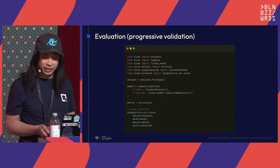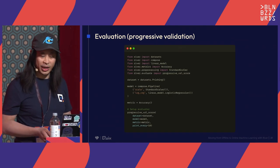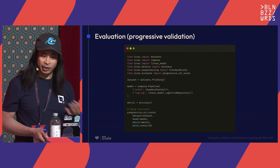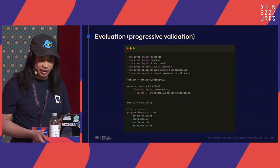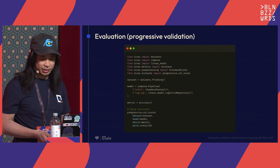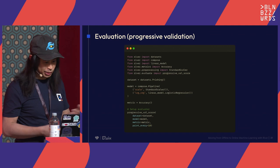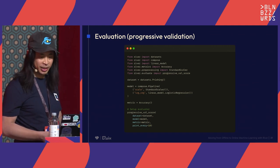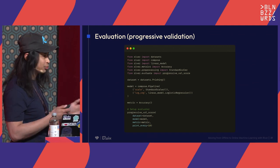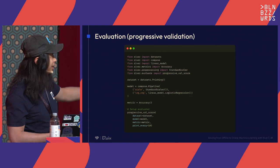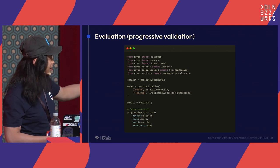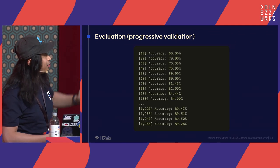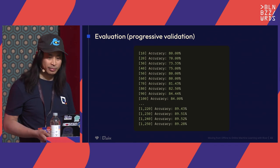You can do progressive validation to evaluate model performance, where the target is revealed to the model after it's made its prediction. To test how well the model performs in production, you can introduce a delay so the ground truth label comes in some time later — representative of real-time cases. You can simulate this and have it print every 10 seconds so you can see the accuracy change over time.